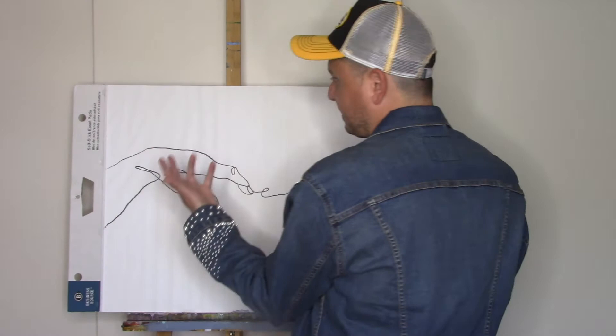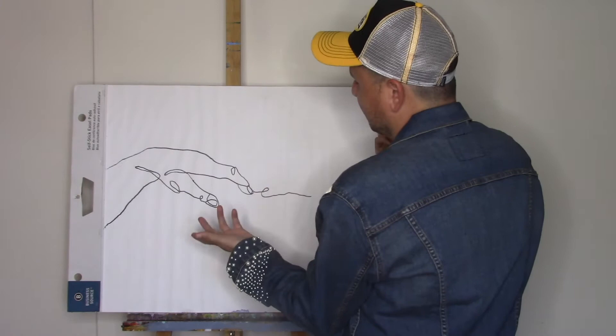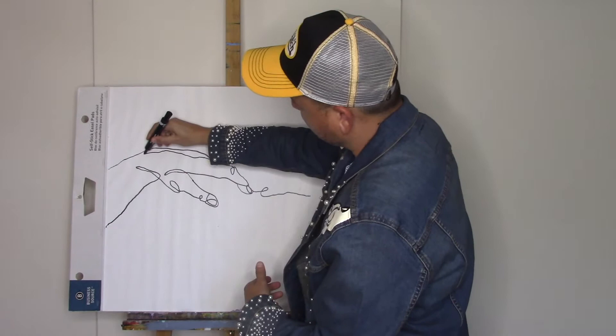You're gonna make another loop and then go out to the arm. Now assess your hand. Okay, maybe you need another line on top because it's too thin, or maybe this is too skinny.